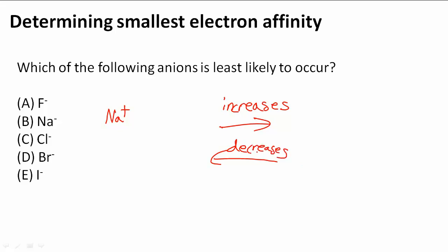F, Cl, Br, and I are all pretty close to the right and have high electron affinities.